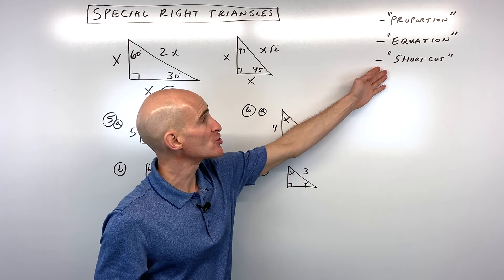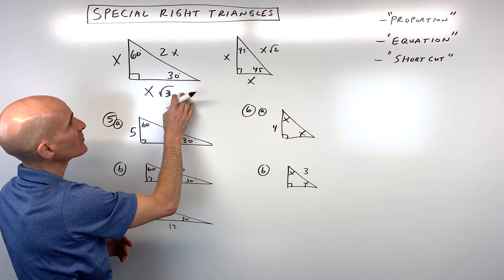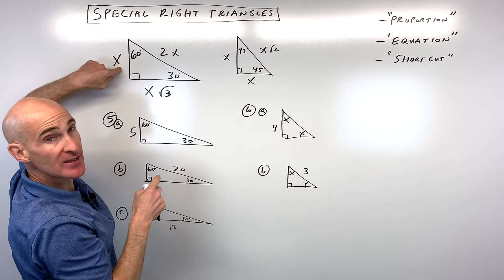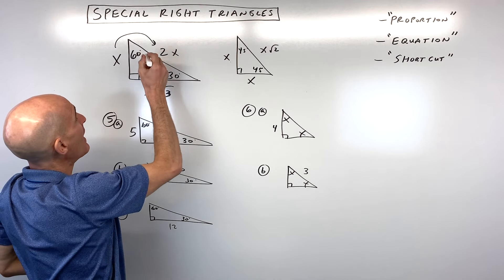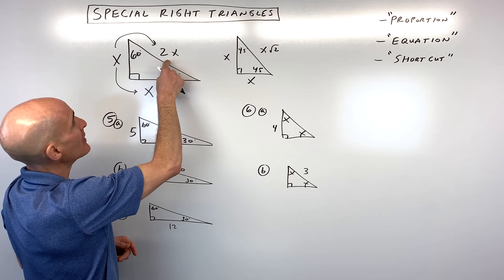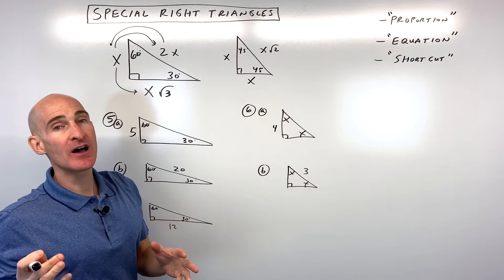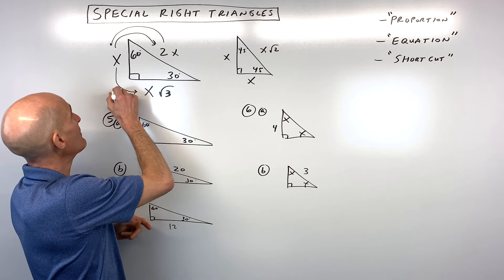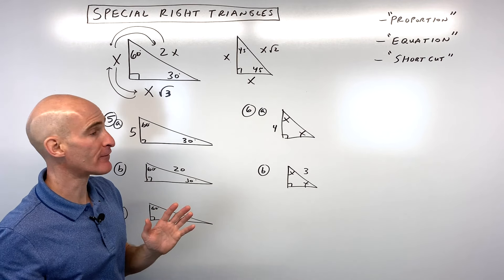Now the third and final method: the shortcut method, my personal favorite. You still memorize the same reference triangles. For the 30-60-90: if given the short leg (x), double it for the hypotenuse and multiply by square root of 3 for the longer leg. If given the hypotenuse (2x), divide by 2 to find x. The toughest case is when given the longer leg (x root 3) — divide by square root of 3 to find x, possibly rationalizing, then double for the hypotenuse.